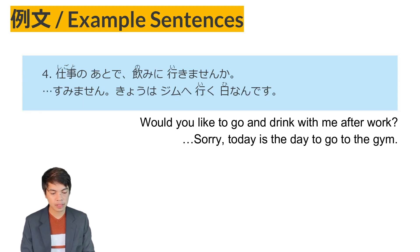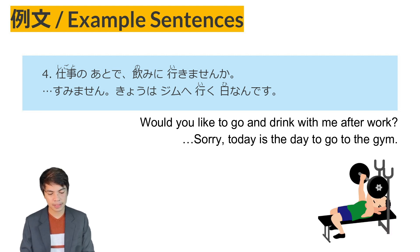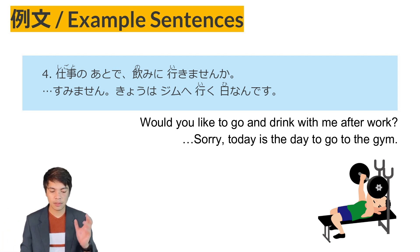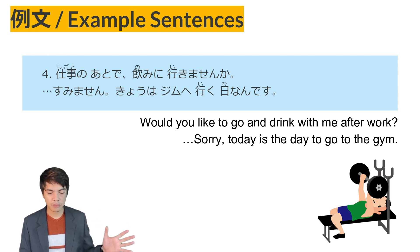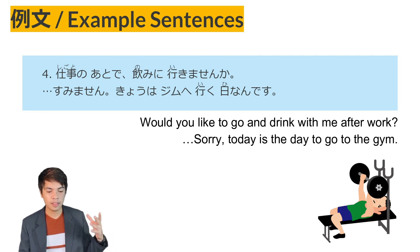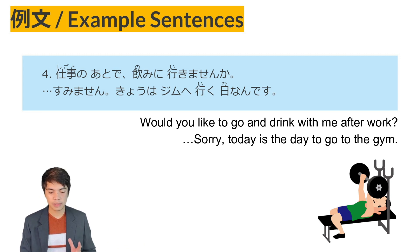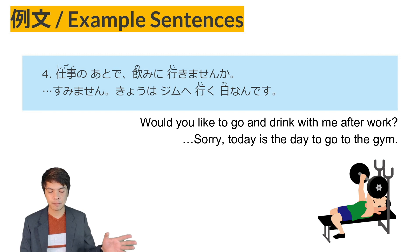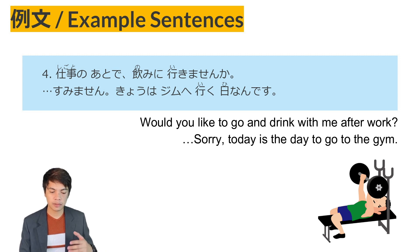Example sentence number four: Shigoto no ato de nomini ikimasen ka? Sumimasen. The first sentence uses noun no ato de — after the noun. Nomini ikimasen ka? is an invitation pattern: 'How about going for a drink?' or 'Won't you come with me for a drink?' He replied, 'Sumimasen, I'm sorry. Kyou wa jimu e iku hi nan desu' — today is the day I go to the gym.